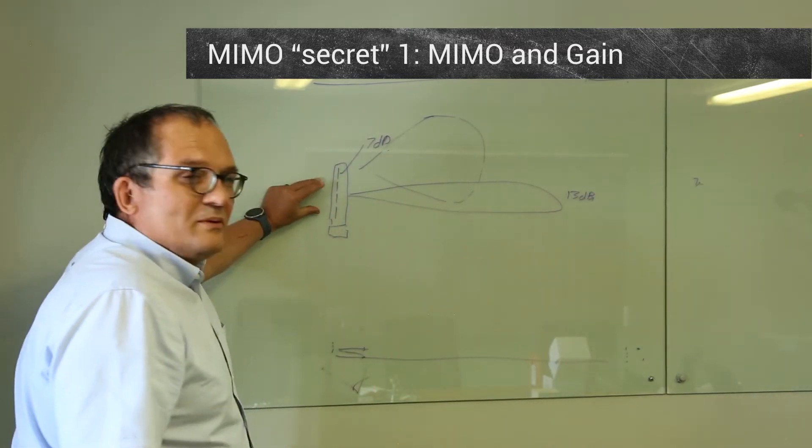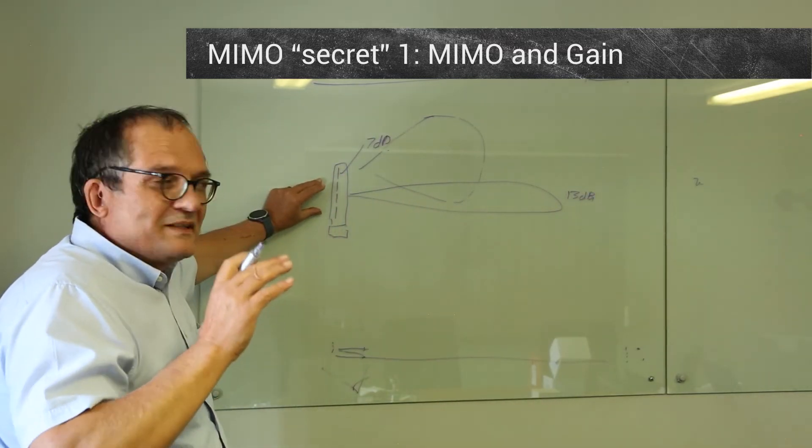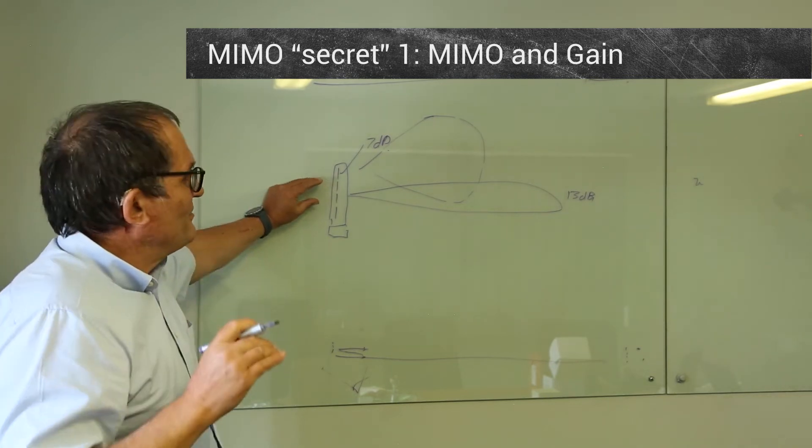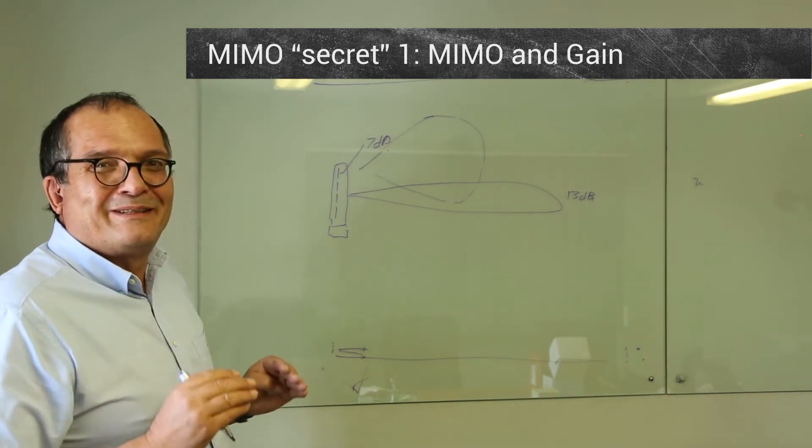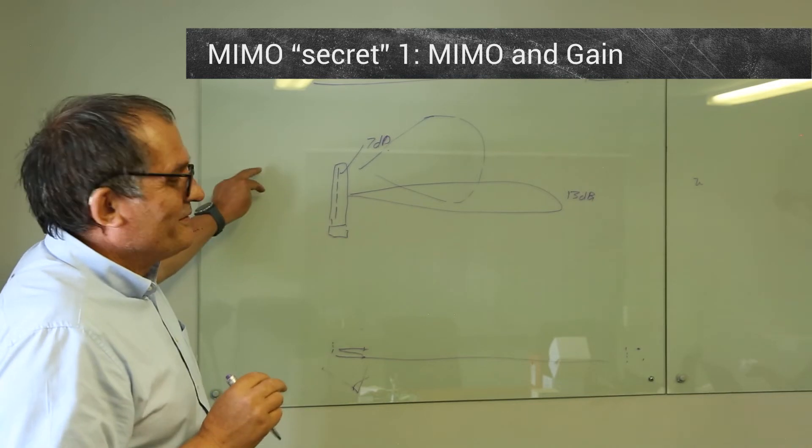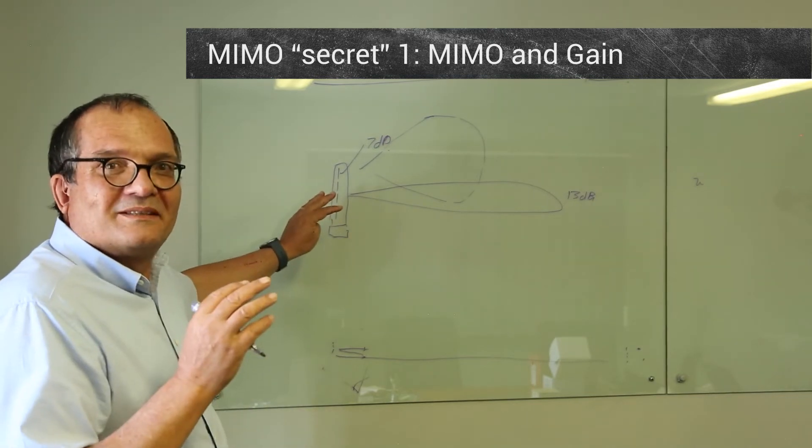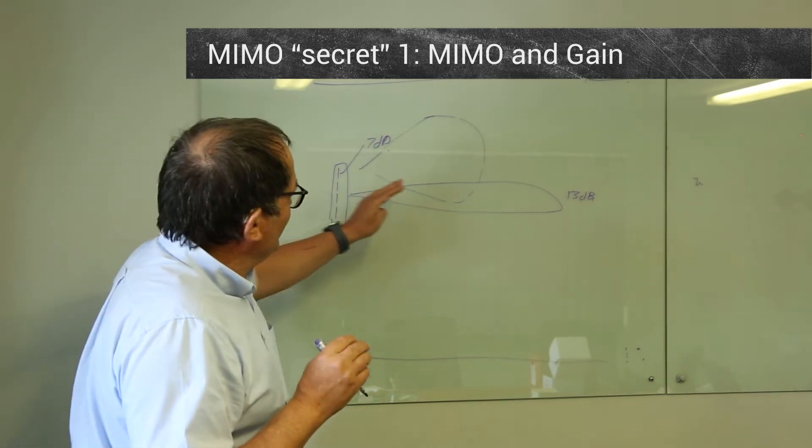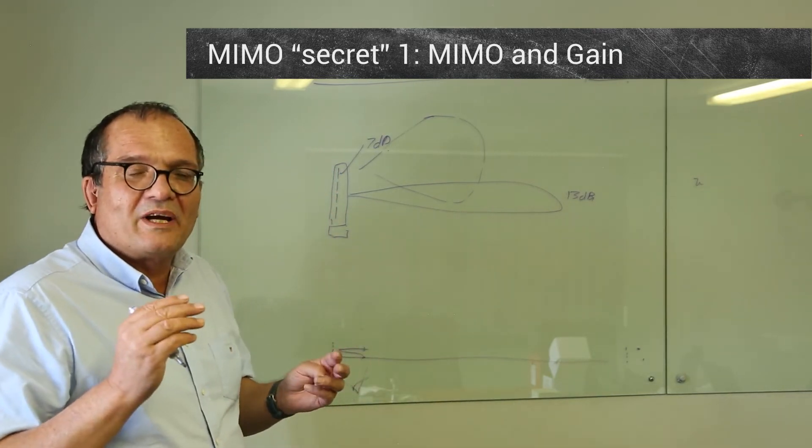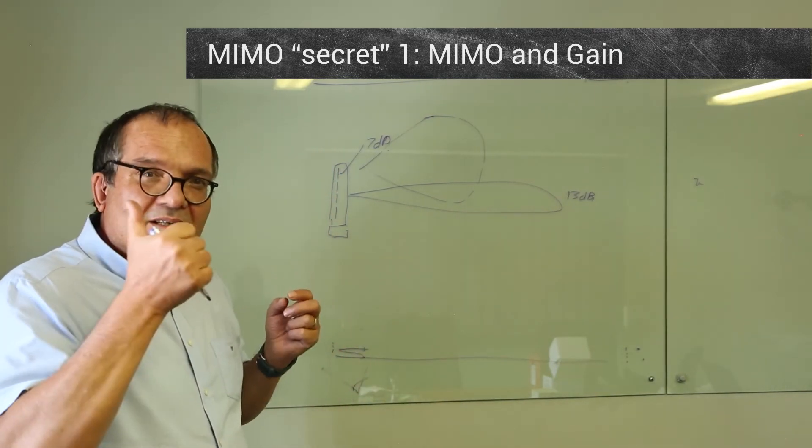Now even though we're not getting multiple streams, so this is a non-MIMO effect obtained by MIMO because it's got that magic box—and go look at the previous video—that can phase things any way it wants. You still get the advantage of suddenly having an antenna that's got six dBi more gain.